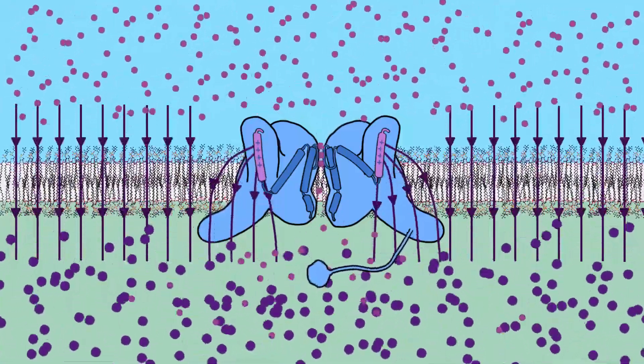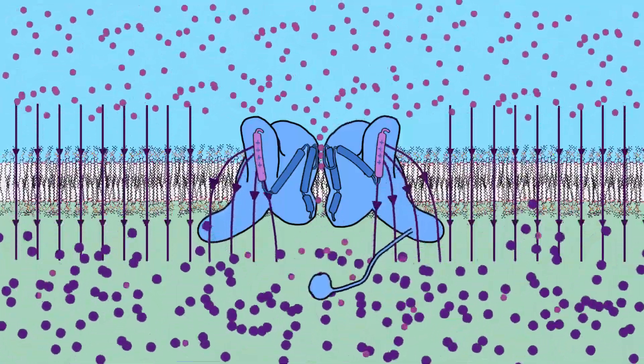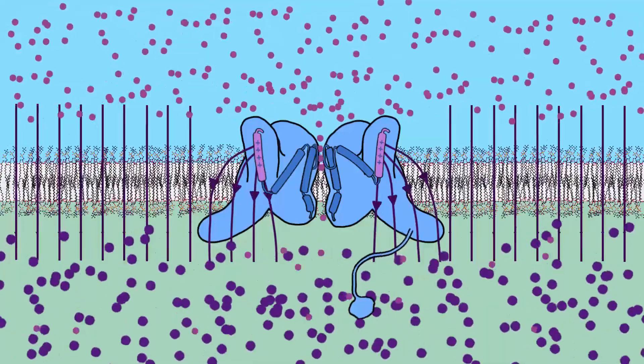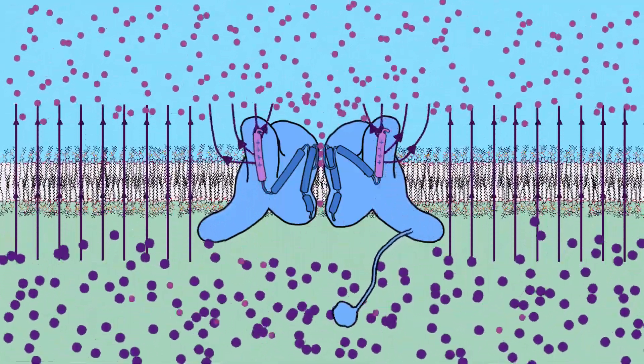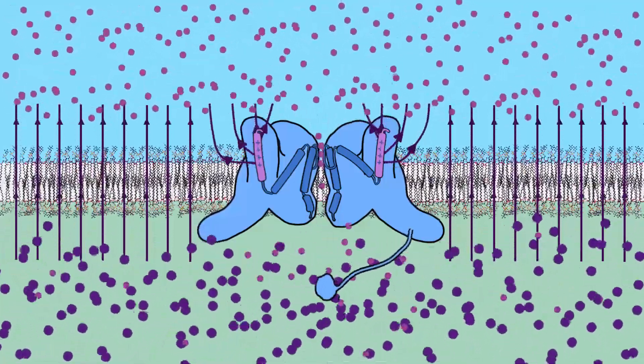As sodium ions pass into the cell, the ratio of ions outside and inside the membrane changes, raising the voltage inside to 30 millivolts, reversing the polarity of the membrane.